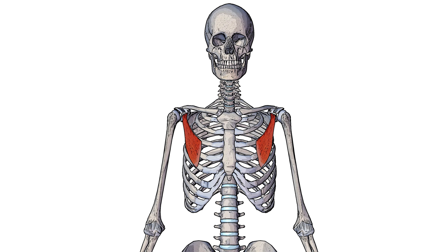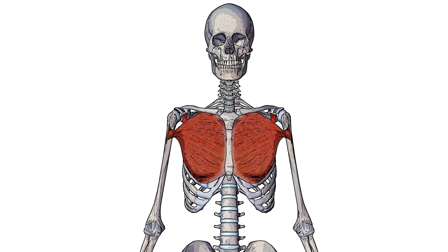Here we can see the pectoralis minor muscle, which sits underneath the pectoralis major muscle. As a point of reference, you can see the pectoralis major muscle right here, and just coming out from underneath it you have the pectoralis minor muscle coming up to meet its insertion on the coracoid process of the scapula.